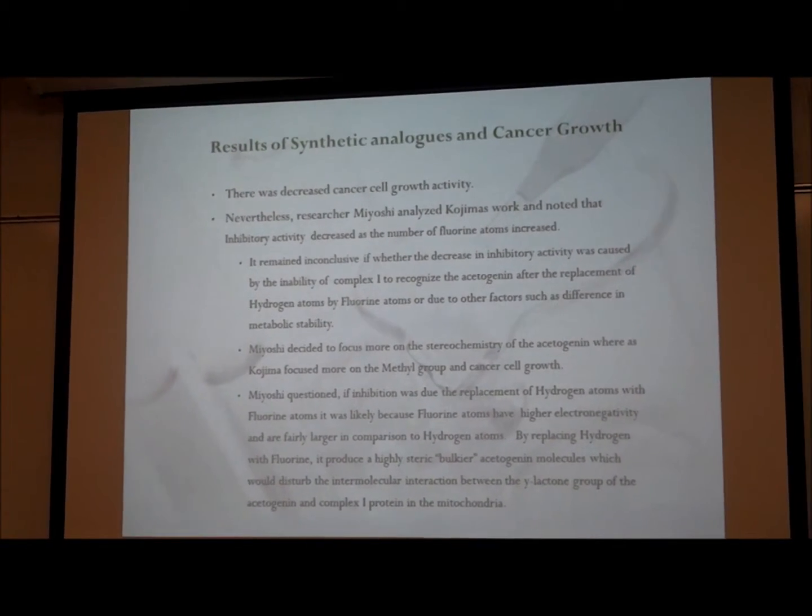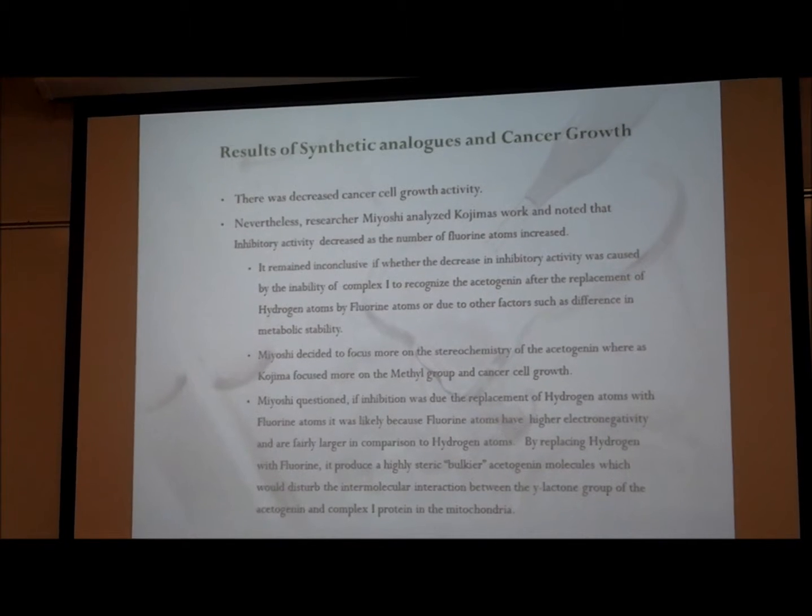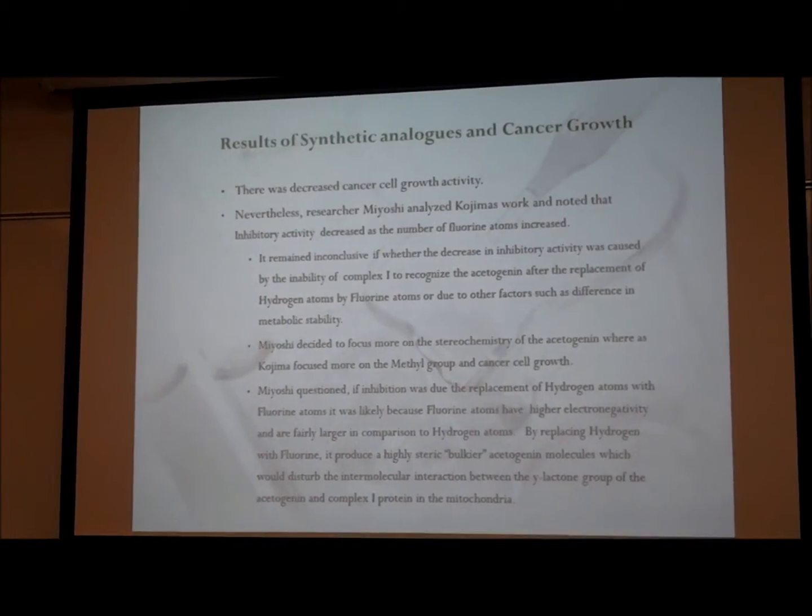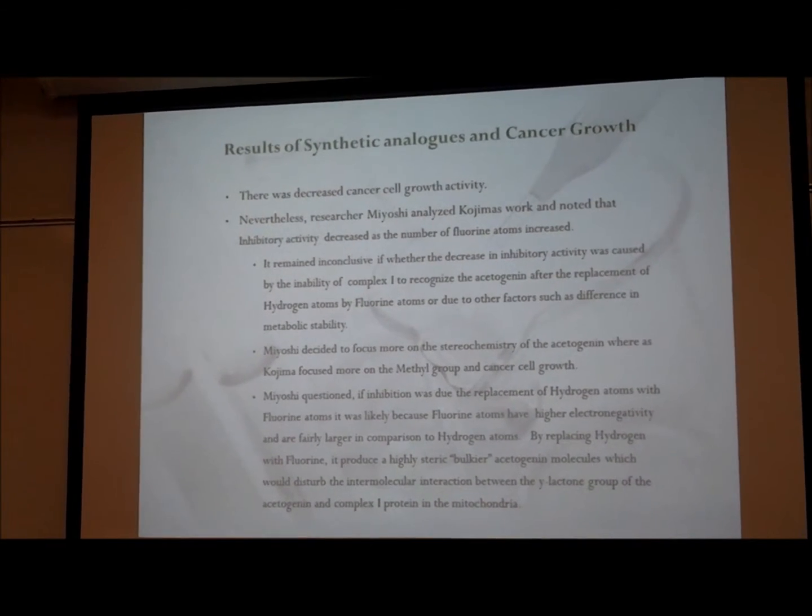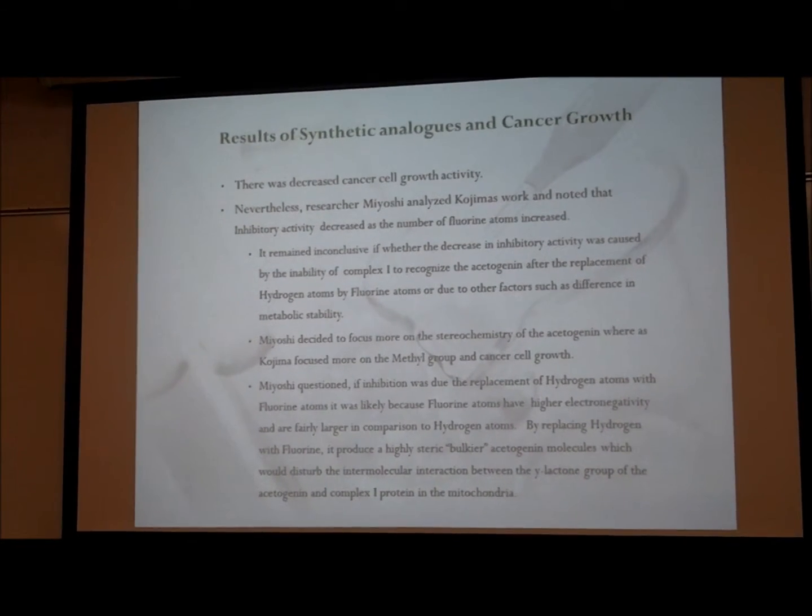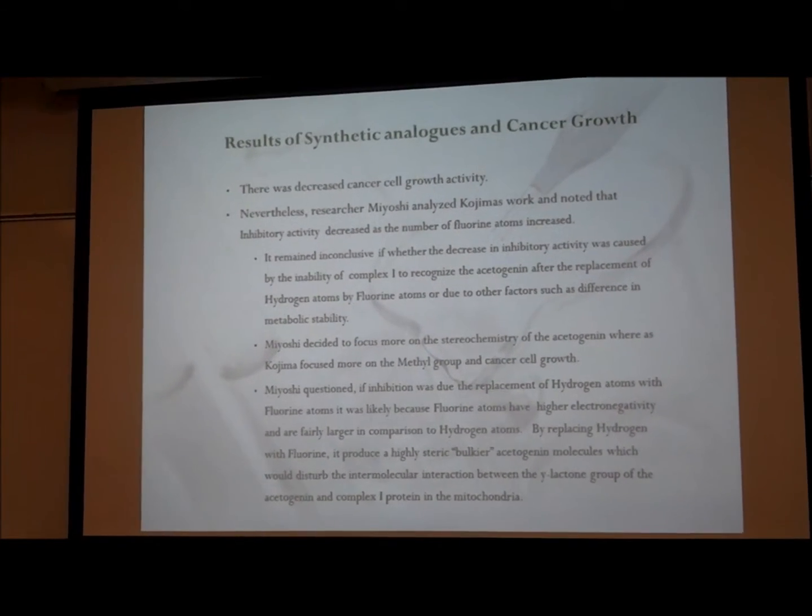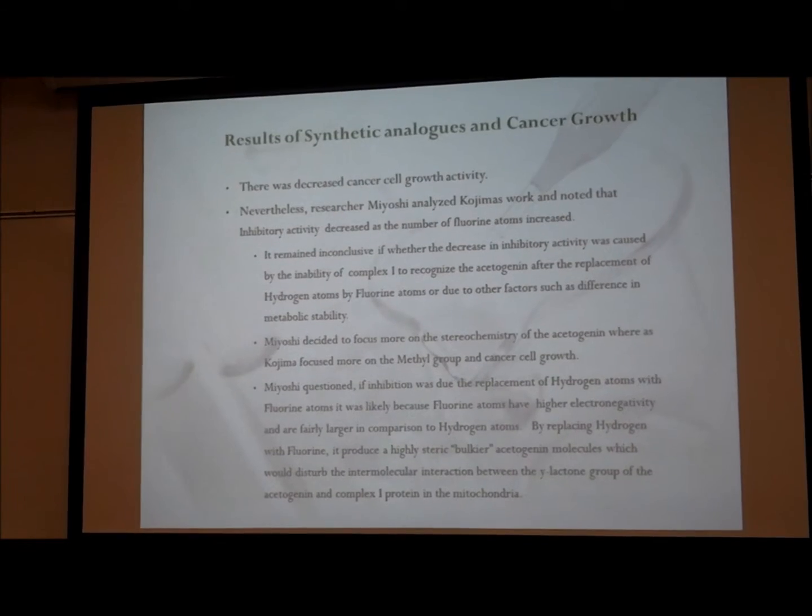Miyoshi's explanation of inhibition was that it was due to the replacement of hydrogen with fluorine. It was probably due to fluorine having higher electronegativity and fluorine being a larger atom than hydrogen. This would create bulkier stereochemistry on the acetogenin molecule.